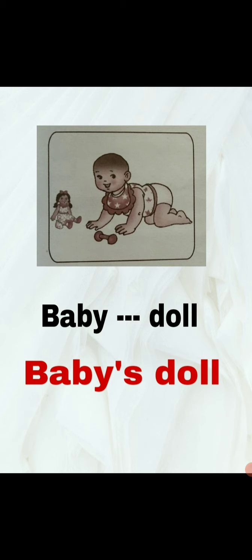The next one: there is a baby in the picture and a doll. Whose doll is it? Whom does the doll belong to? It belongs to the baby. So you are going to write Baby's doll — add apostrophe S.